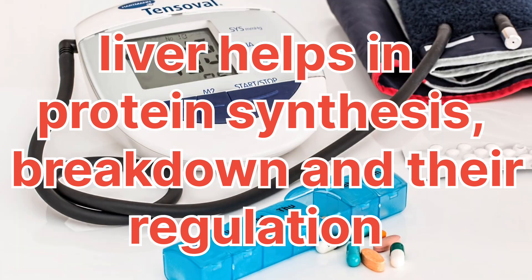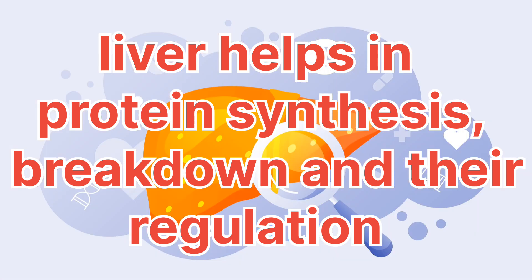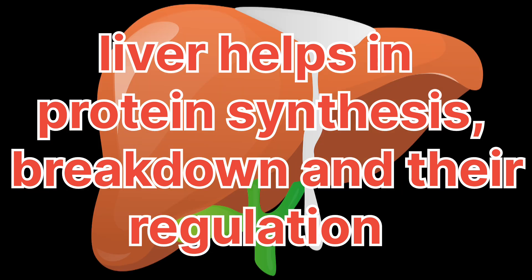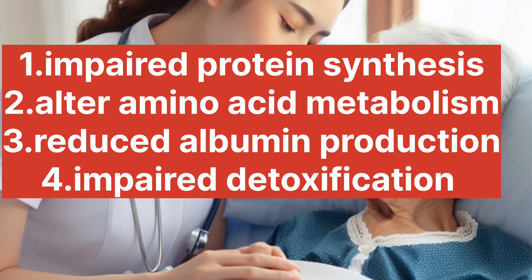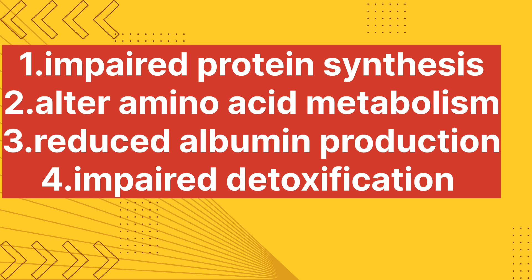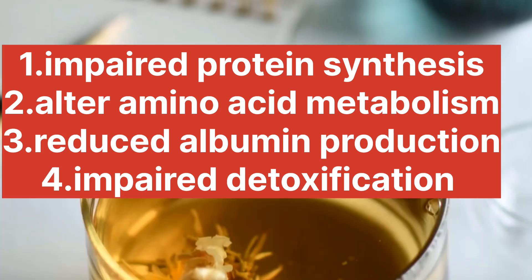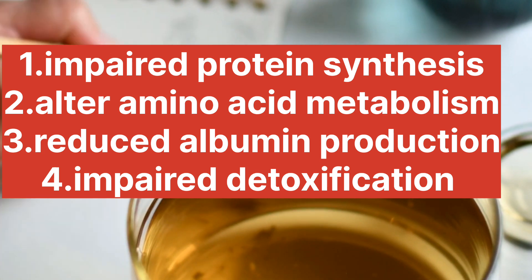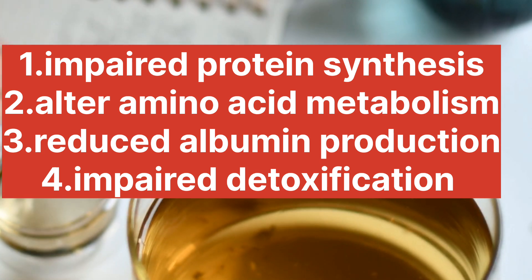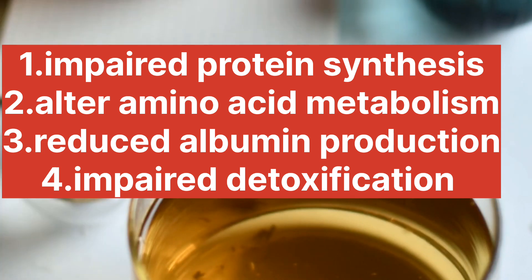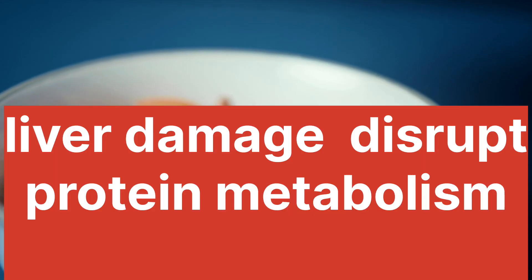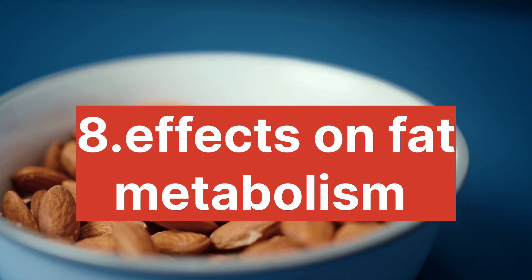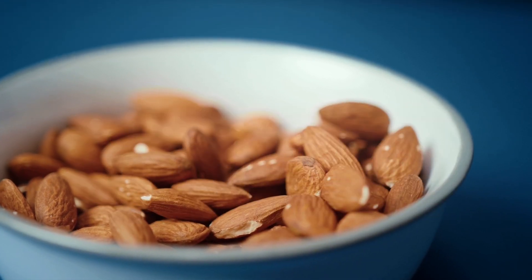Number seven: effect on protein metabolism. Liver damage can have profound effects on protein metabolism, as the liver is a central organ in protein synthesis, breakdown, and regulation. Ways liver damage can impact protein metabolism include: impaired protein synthesis, altered amino acid metabolism, reduced albumin production, and impaired detoxification. Liver damage can disrupt protein metabolism, amino acid balance, and the body's ability to detoxify harmful substances, which can have widespread effects on various physiological processes.